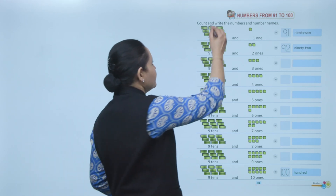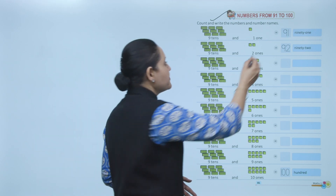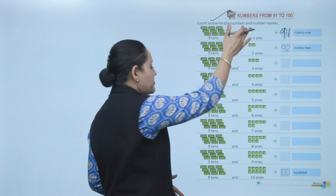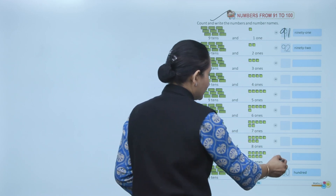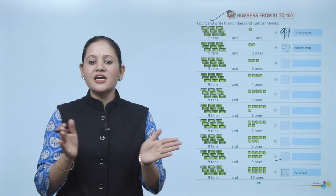Next, numbers from 91 to 100. Count and write the numbers and number names. 91 means 90 plus 1 — 9 tens plus 1 one — that makes number 91. N-I-N-E-T-Y-O-N-E. Like this you can make numbers up to 99. Then comes 100: 1-0-0. That means 9 tens and 10 ones — 90 plus 10 equals 100. H-U-N-D-R-E-D.